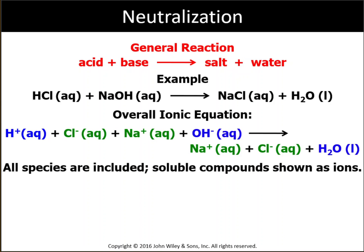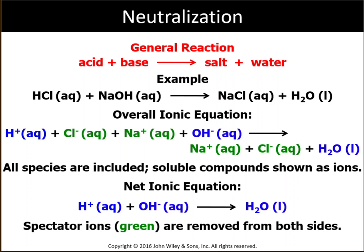Let's look at the total ionic and net ionic for this reaction. The net ionic is basically the reaction of hydrogen ion and hydroxide ion, which produces H₂O. The ions shown in green are called spectator ions, meaning their concentration during the reaction doesn't change. However, the concentration of hydrogen ion and hydroxide ion does change. This is called a neutralization reaction because the hydronium ion and hydroxide ion react to produce water, which is neutral.